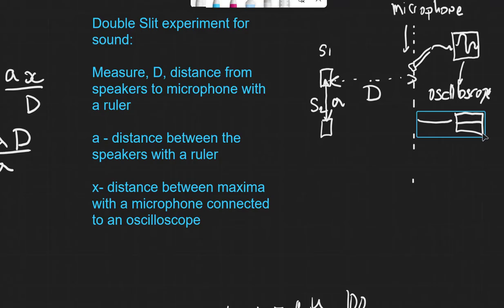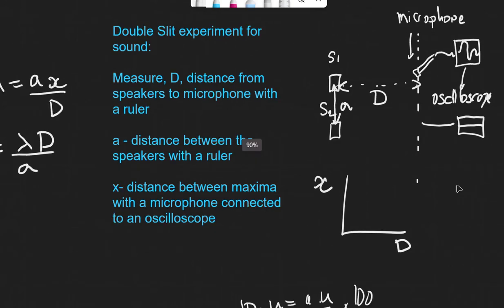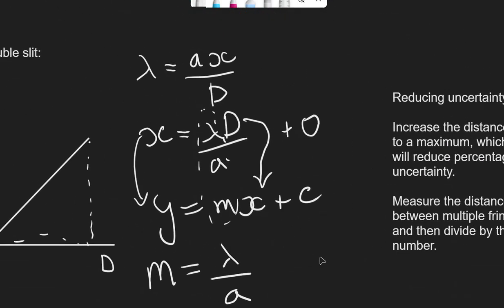Afterwards, follow exactly the same procedure: vary the distance D, measure the fringe separation X, plot a graph of X against D, and find the gradient in the same way as for the light experiment. I'm hoping this video was useful. If you're revising this, you definitely need to have a look at the video on superposition, which is incredibly connected to this topic. Good luck with your revision — you've got this.